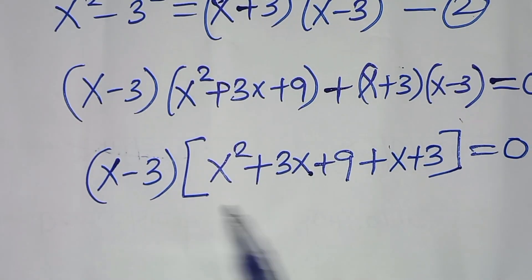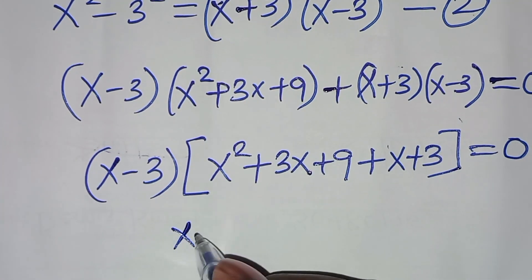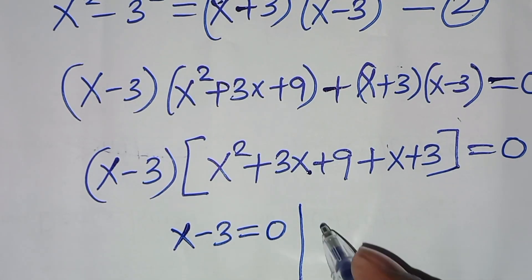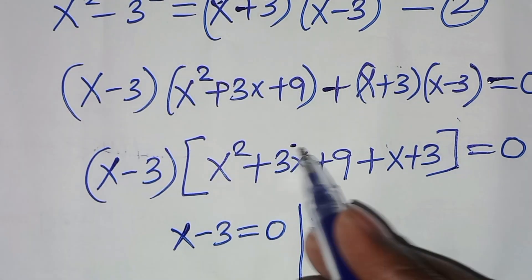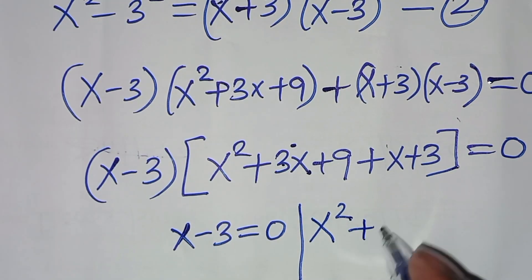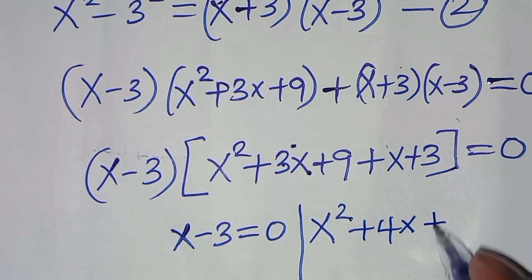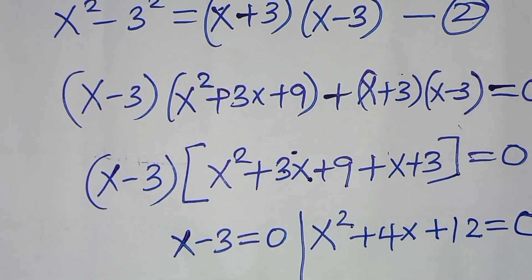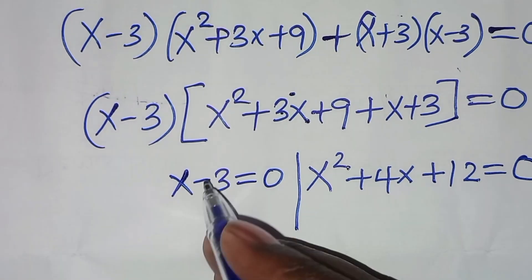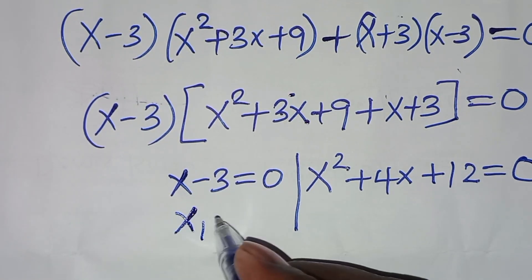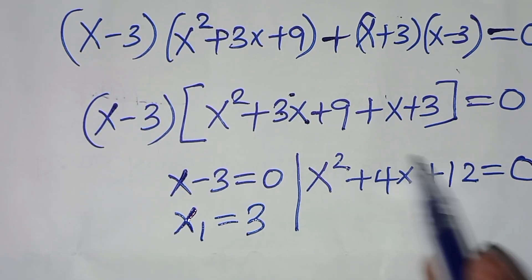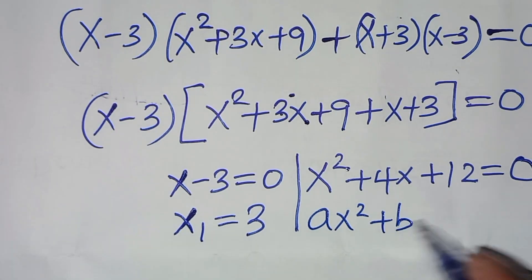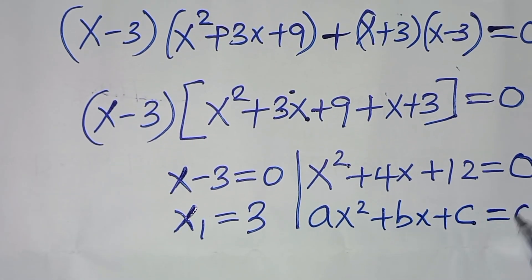This implies x minus 3 equals 0, and the second part is x squared plus 3x plus x, that means 4x, so plus 4x, then plus 9 plus 3 which is 12, so x squared plus 4x plus 12 equals 0. From the first part, x₁ equals 3. The next part is a quadratic equation of the form ax squared plus bx plus c equals 0.